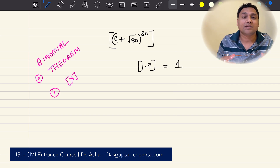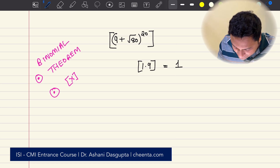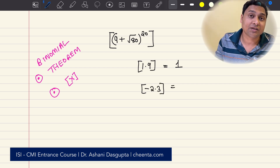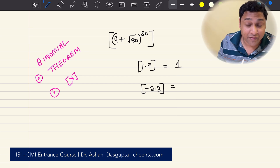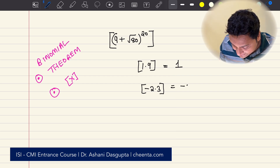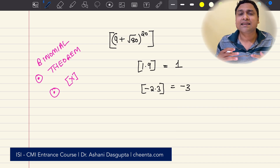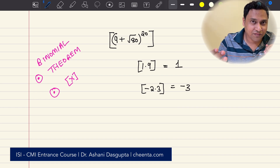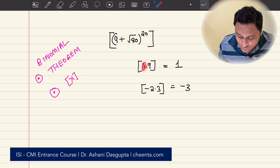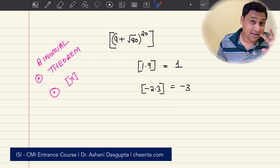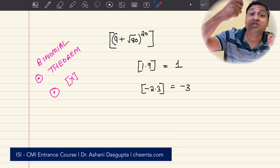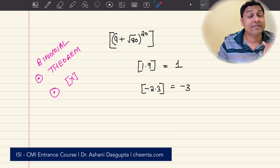The greatest integer smaller than 1.9 is 1. Let's look at another example: minus 2.3. What is the greatest integer smaller than negative 2.3? That's negative 3. So do not get confused by the nearest integer function. For example, the nearest integer to 1.9 is 2 — that's a very different function. The greatest integer function is the integer which is smaller than the actual number.